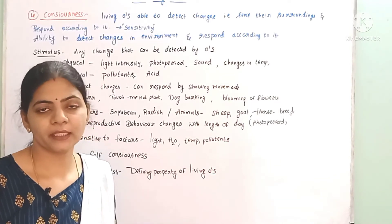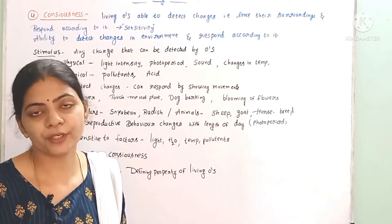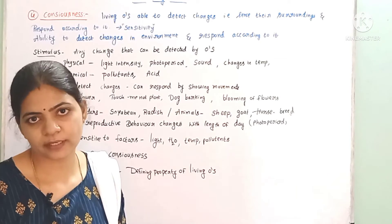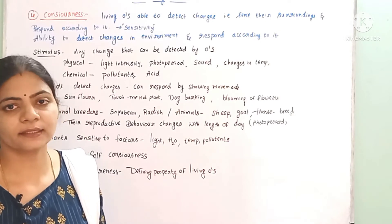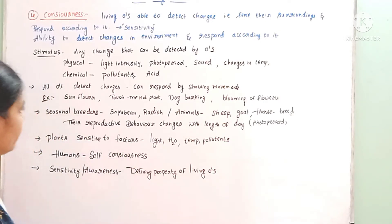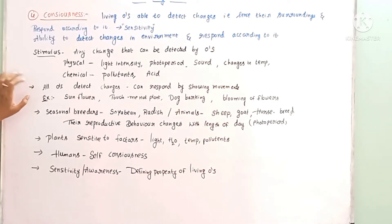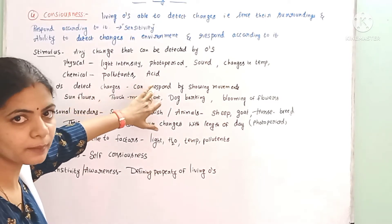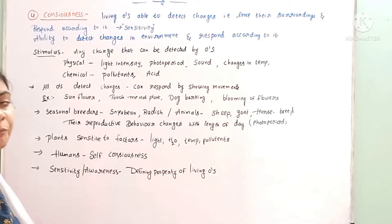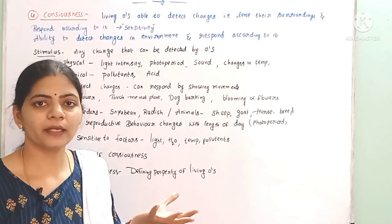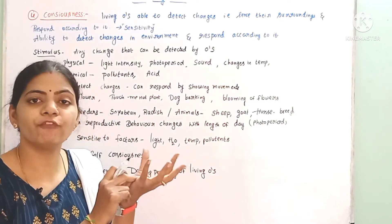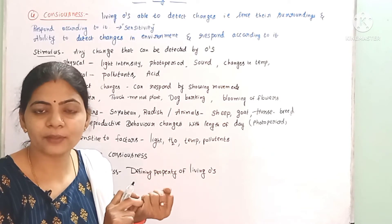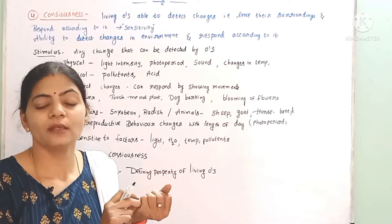In summer, because of increased temperature, our body shows a response — sweating — according to the temperature stimulus. All organisms are able to detect changes and respond accordingly. For example, if we touch a touch-me-not plant, it feels that touch stimulus and folds its leaves. Folding of the leaves is the response given by the touch-me-not plant.